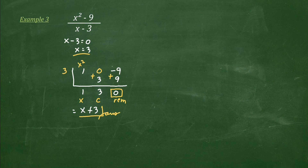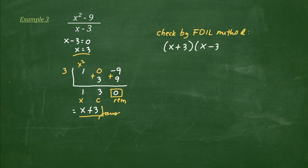So finally, this means — since our remainder is 0 — this dividend is exactly divisible by x minus 3. Meaning, x minus 3 is a factor of this polynomial. Again, we can check the answer by multiplying this answer by the divisor using the FOIL method, as quickly shown here.